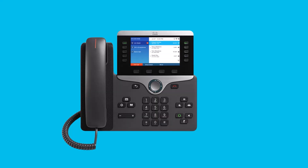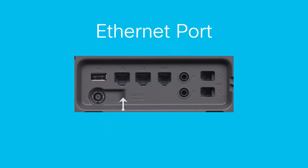To start, the phone needs to have power and connectivity to the network. If you already have connectivity, you can skip to the next section of the video. To get connectivity, you will need an Ethernet cable. Connect one end to the Ethernet port on the back of the phone — it is labeled with an icon of three connected computers.